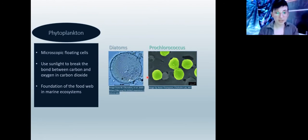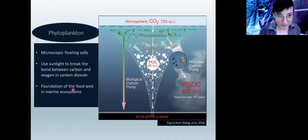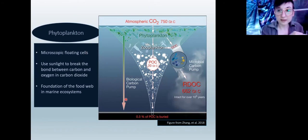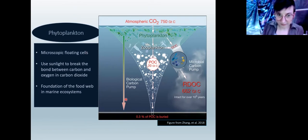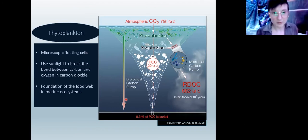The thing that really unites all phytoplankton is that they're photosynthetic, right? They all have the ability to take the sunlight's energy and use it to break the bond between carbon and oxygen from carbon dioxide in the air. They use that carbon and assimilate it into their own bodies and use it for their own cellular processes. So they really are the ones fixing carbon from the atmosphere and putting it into the food chain. They're really the foundation of the food web in marine ecosystems.